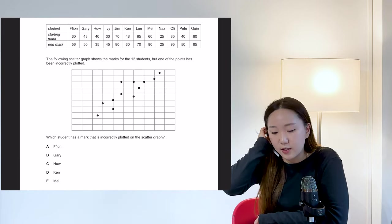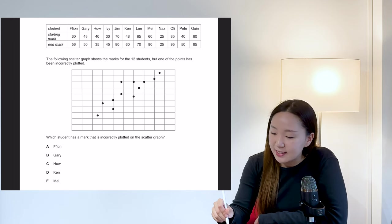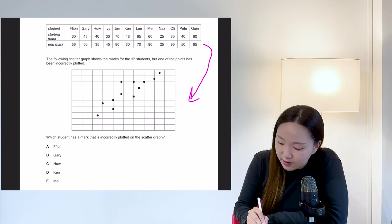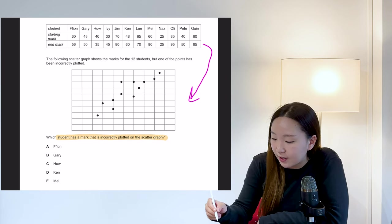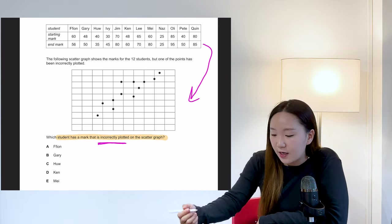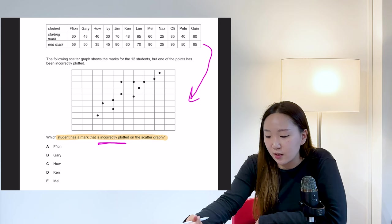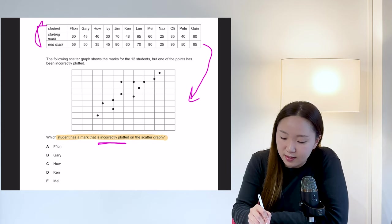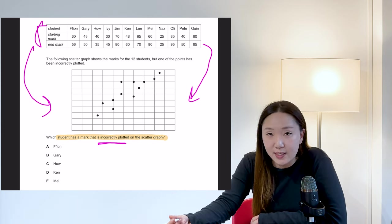Okay. So we've got a table that's being translated into a graph question here. And in this case, we're being asked to find a student that has a mark incorrectly plotted on a scatter graph. Now, again, this question has come up, I think two or three times before. If you don't know how to convert these marks into this kind of table, just let me quickly tell you.